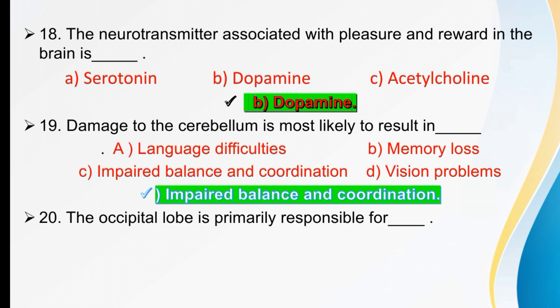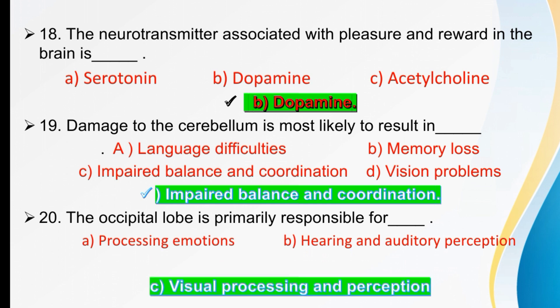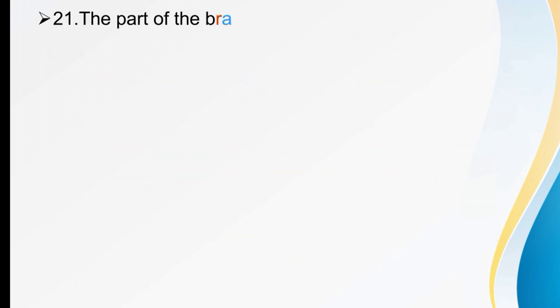The occipital lobe is primarily responsible for dash. Options are processing emotion, hearing and auditory perception, visual processing and perception, or memory formation. The occipital lobe is primarily responsible for visual processing and perception.